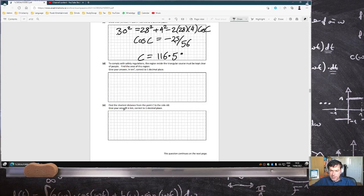To comply with safety regulations, the regions inside the triangle must be kept clear if people find the area of this region. Fine. Area is a half, 28 times 4 times sine 116.5. So that's 50.1 km squared.